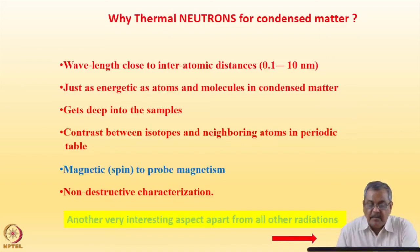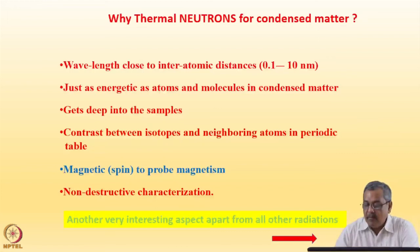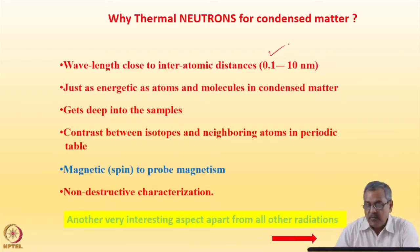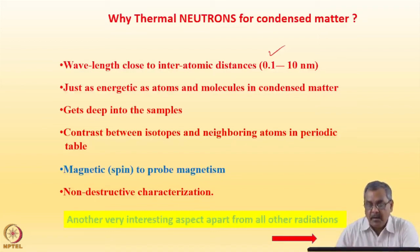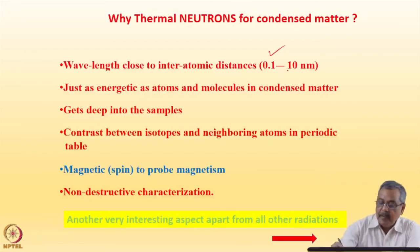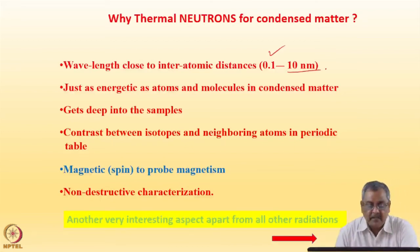There are many reasons for choosing thermal neutrons for the study of condensed matter. One is that the wavelength is very commensurate with inter-atomic distances, typically around 0.1 to 10 nanometers — that is, 1 Ångström to 100 Ångströms. Various kinds of structures exist at this length scale: crystallographic arrangements in a crystal are around 1 Ångström, while inhomogeneities like pores in a rock, chemical precipitates, or colloidal samples have structures around 10 nanometers or 100 Ångströms.